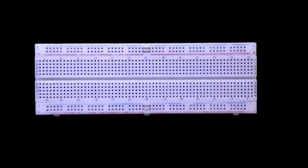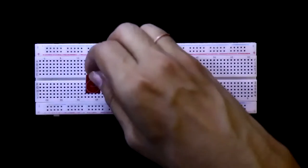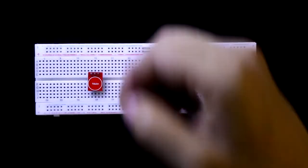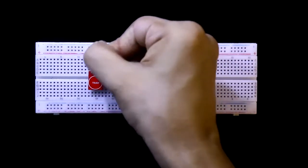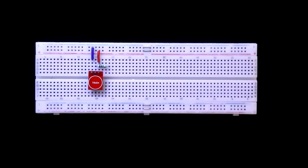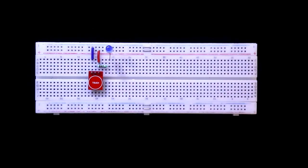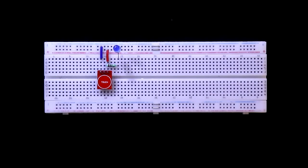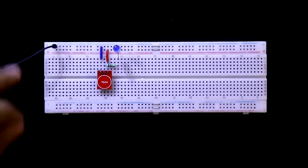Now see this on the breadboard. A and B are open. Now I'm putting the VCC, ground, 220 ohms resistor. Positive pin of the LED is connected to the resistor and the negative pin is connected with the ground. So this is all about the connection.